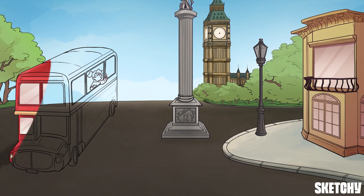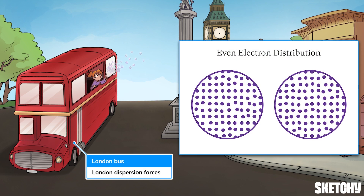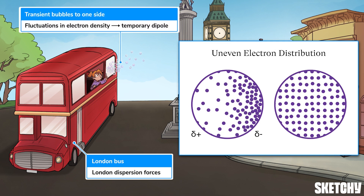For London dispersion forces, let's check out this red double-decker bus — an iconic way to see the sights of London. London dispersion forces are a type of van der Waals interaction that are caused by random fluctuations in electron density. Because electrons are constantly in motion, they can become unevenly distributed.